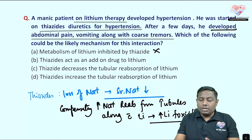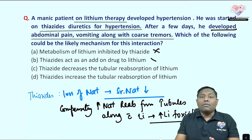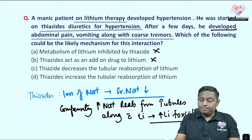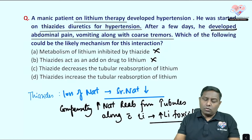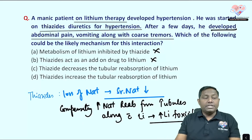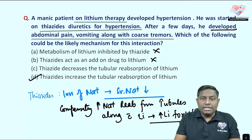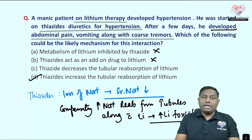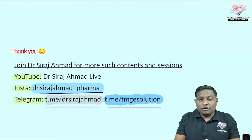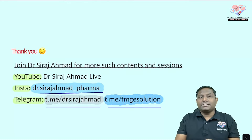Thiazide does not inhibit lithium metabolism, nor does it act as an add-on drug to lithium. The correct mechanism is that thiazide increases tubular reabsorption of lithium as a compensatory response to hyponatremia. Therefore, the correct answer is option D. This was a PYQ from a previous NEET PG or INICET examination.